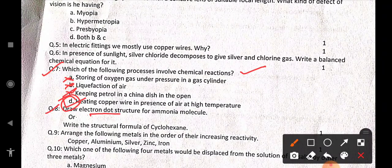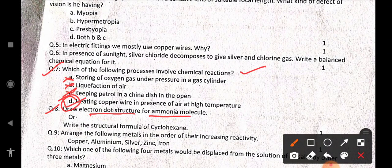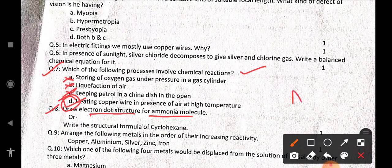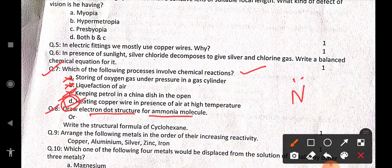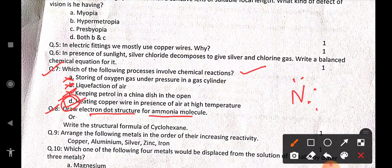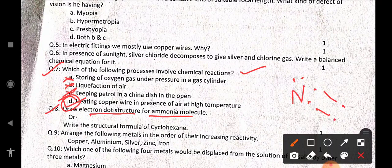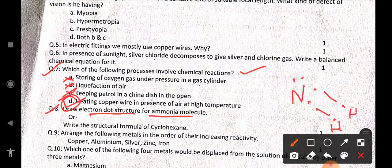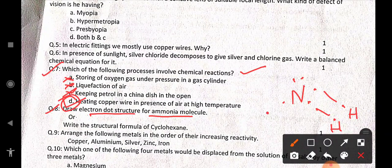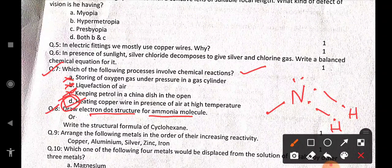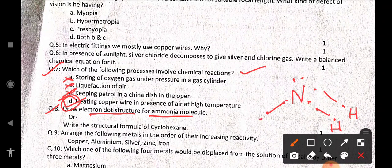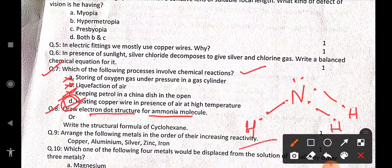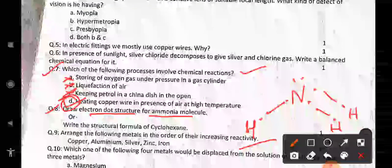Then draw electron dot structure for ammonia molecule. It will be like this. So this is going to be your electron dot structure. Fine?